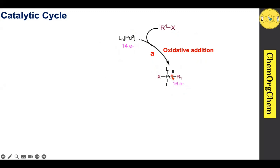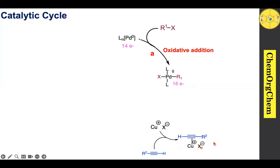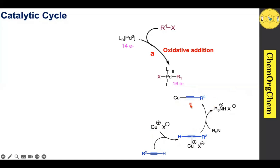Simultaneously, the copper catalytic cycle operates. The copper salt readily forms a π-complex with the alkyne. Then an organic base deprotonates the terminal proton, producing the corresponding copper acetylide.